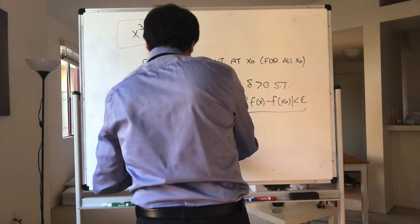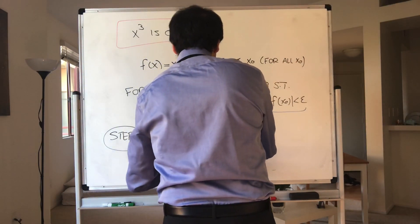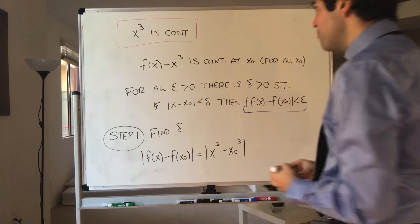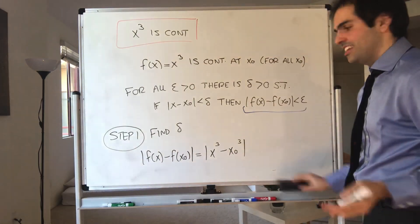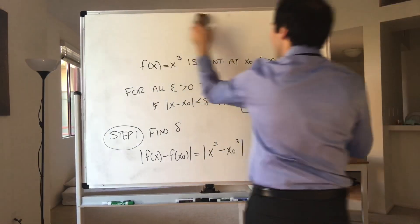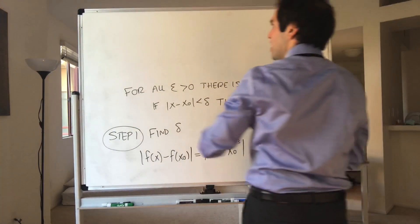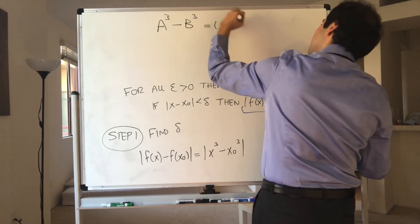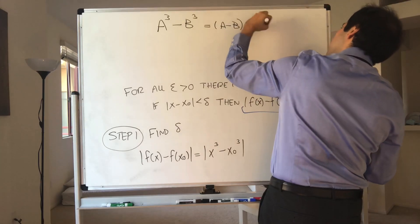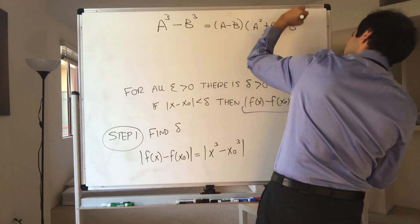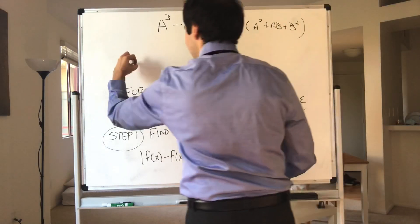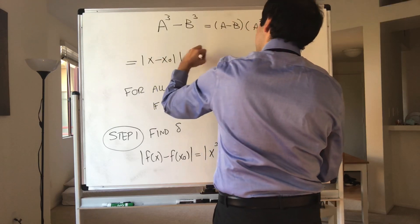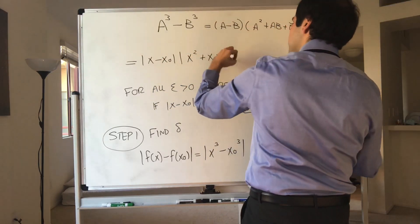Now, f of x minus f of x naught is just x cubed minus x naught cubed. But remember, there's this beautiful identity that takes care of the difference of cubes. It says that a cubed minus b cubed equals a minus b, times a squared plus ab plus b squared. And in particular, this identity becomes x minus x naught times x squared plus x·x naught plus x naught squared.